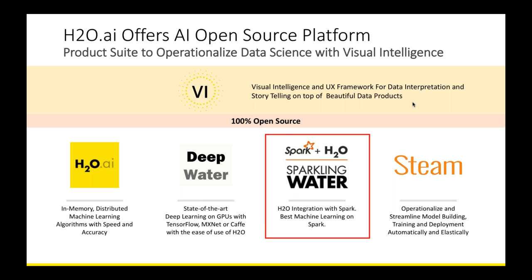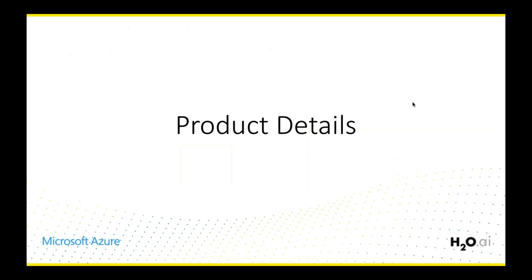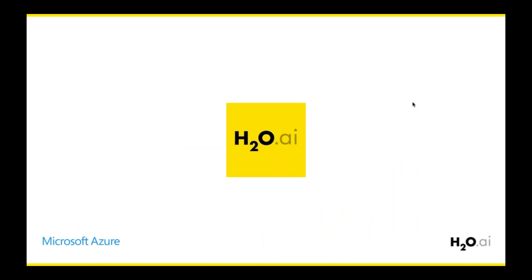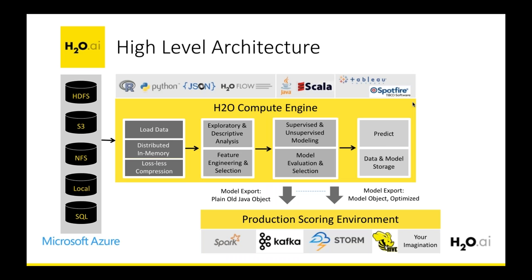Today's focus is Sparkling Water. Let's start with the core H2O platform since that's where all the algorithms reside. Data can be ingested from a variety of sources, including Azure Blob Storage and Azure Data Lake. Once ingested, what you create is an in-memory key-value store — the H2O DataFrame — built with lossless columnar compression. This allows loading more data into memory compared to disk, giving significant improvements in speed and scalability.